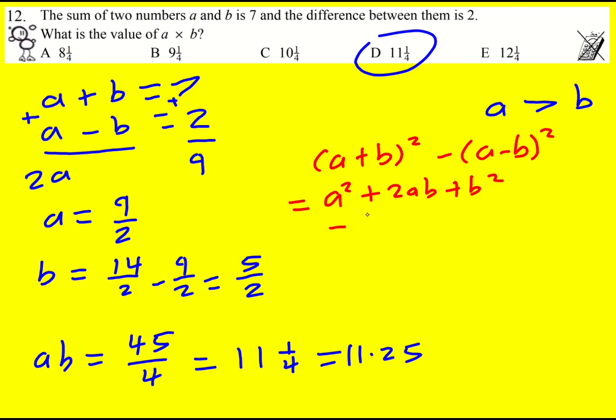Because what you get here is you actually get a squared plus 2ab plus b squared minus a squared minus 2ab plus b squared and expanding the bracket will mean that these cancel and these cancel and actually we're left with 4ab.